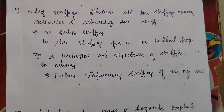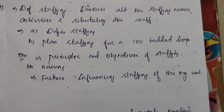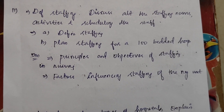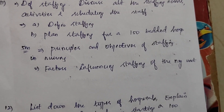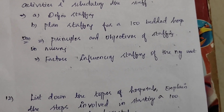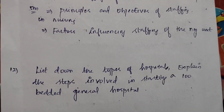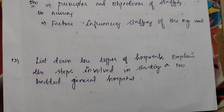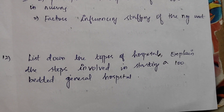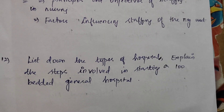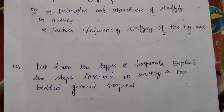Next, functions of HRD. Define staffing and discuss the staffing norms, activities and scheduling of staff. Next, define staffing and plan staffing for a 150-bedded hospital — 5 marks. In 5 marks, principles and objectives of staffing in nursing and factors influencing staffing of the nursing unit. Next, list down the types of hospitals and explain the steps involved in starting a 100-bedded general hospital. This is more or less similar to the next question.